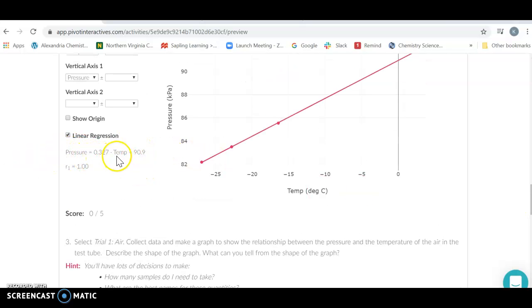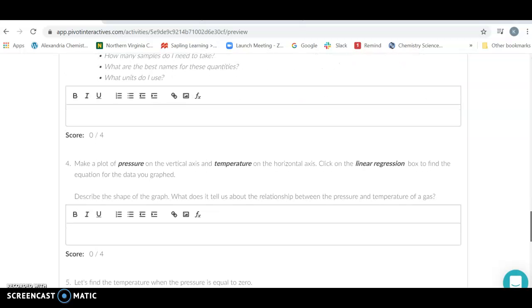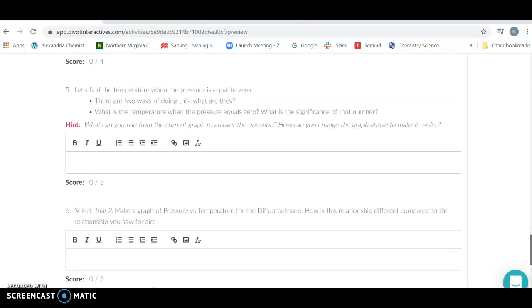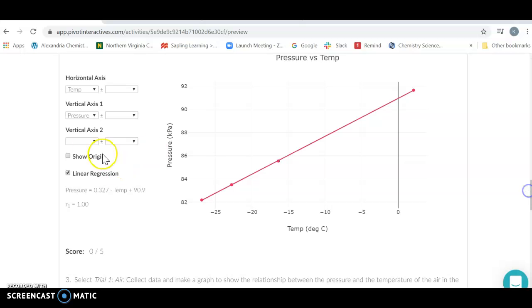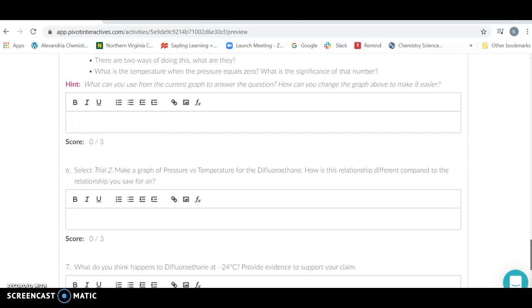Now we should know what that's going to be, because that is going to give us absolute zero. We know at absolute zero that our pressure should be zero, but you're going to verify that. You're also going to have the option here to show the origin, so take a look at that and see what that does.